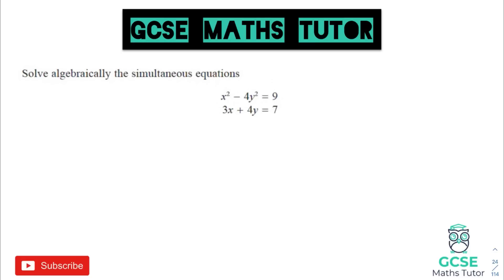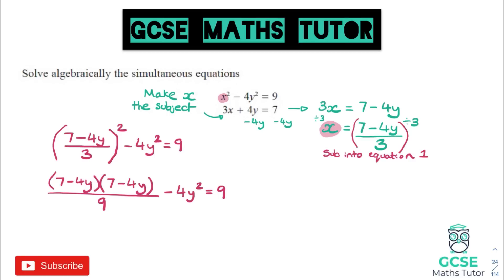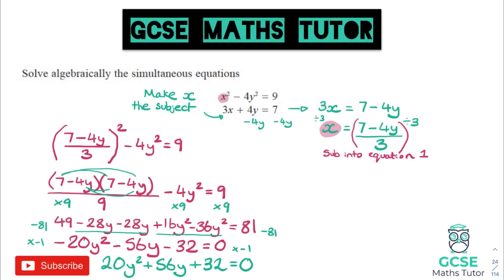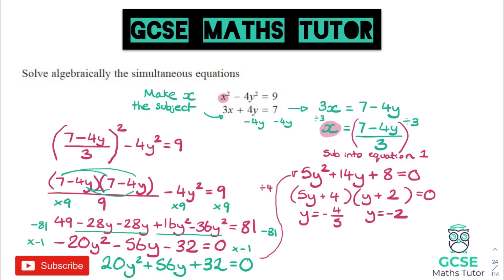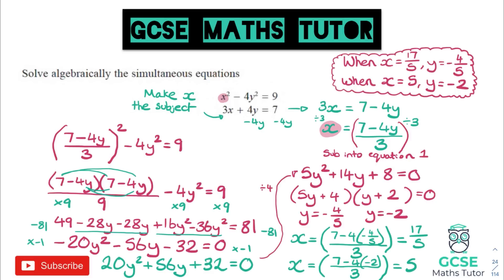For quadratic simultaneous equations, follow this process: rearrange the linear equation until it says x or y equals something, then substitute that into the quadratic. Expand and simplify, making it equal zero so you can factorize and solve — or use the quadratic formula on a calculator paper. Once you have your values, substitute them back into the linear equation to find the other variable, whether x or y was found first.